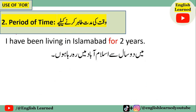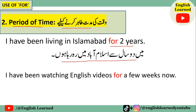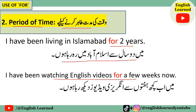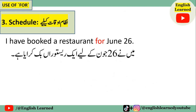Ek aur case jismein hum 'for' ka istamal kar sakte hain woh hai period of time — yani ke waqt ki muddat zahir karne ke liye. Example: 'I have been living in Islamabad for two years' — main do saal se Islamabad mein reh raha houn. Ek aur example: 'I have been watching English videos for a few weeks now' — main ab kuch haftton se English videos dekh raha houn.